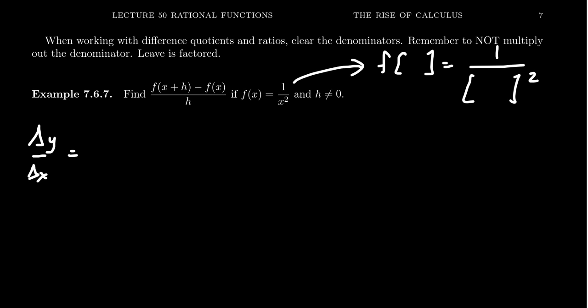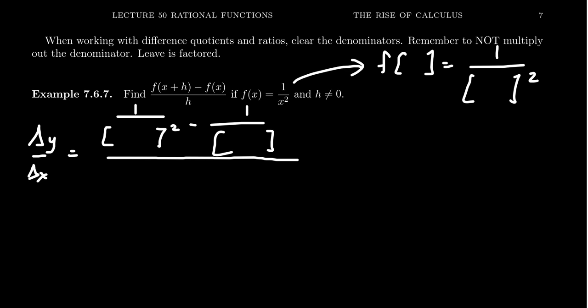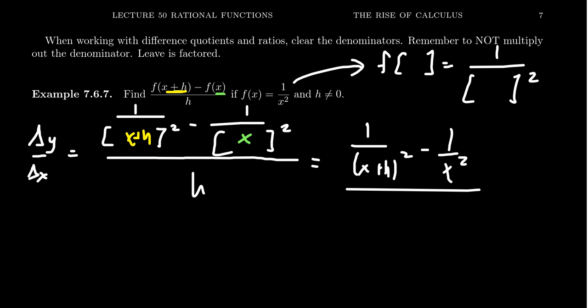So in your numerator, you're going to have one over blank squared minus one over blank squared. The denominator is always an h. For the first blank, you get x plus h, and for the second one, you just get an x. Rewriting it a little bit simpler, you get one over (x+h)² minus one over x², all over h.